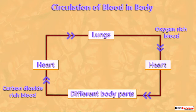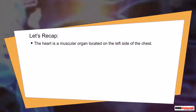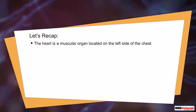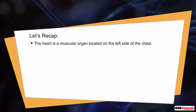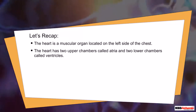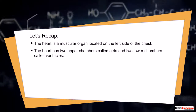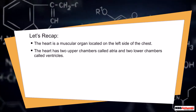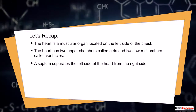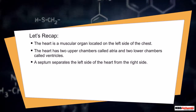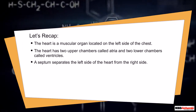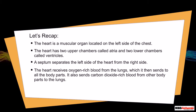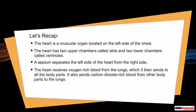Let's recap. The heart is a muscular organ located on the left side of the chest. The heart has two upper chambers called atria and two lower chambers called ventricles. A septum separates the left side of the heart from the right side. The heart receives oxygen-rich blood from the lungs, which it then sends to all the body parts.